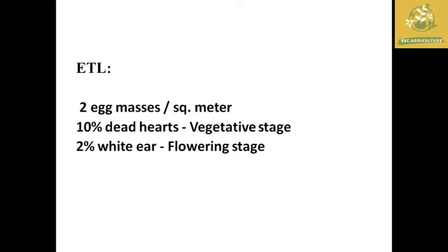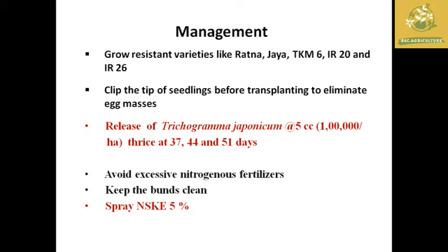The economic threshold level for stem borers is two egg masses per square meter, ten percent dead hearts at vegetative stage, or two percent white ears at flowering stage. If the damage by these pests exceeds these threshold levels, required management action must be taken at the field level.